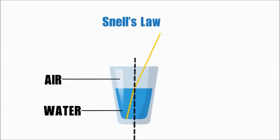His formula states that the ratio of the sines of the angles at which the light passes through two objects is equivalent to the reciprocal of the ratios of their respective refraction index.